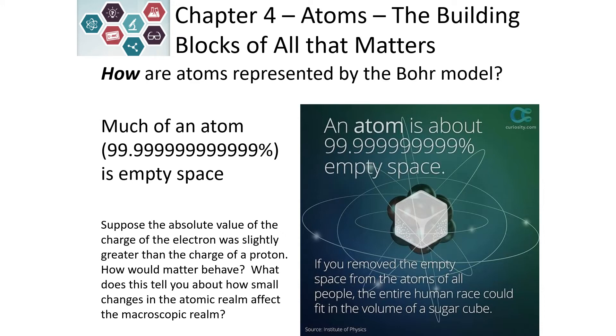Think about if we had electrons and they were just slightly more negative than the proton was positive. What would happen? How would matter behave? Well, if they were a little more negative, our atoms would repel each other and no matter would stick together and the universe as we know it would not exist. So even very small changes on the atomic scale have very large consequences in the macroscopic world that we know.